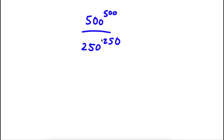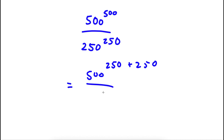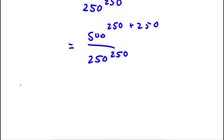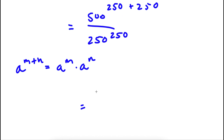Alright, so I have 500 to the power of 500 over 250 to the power of 250. Now, 500 we can rewrite as 250 plus 250. I have this over 250 to the power of 250. Now, if I have something in the form a to the power of m plus n, this is equal to a to the power of m times a to the power of n. So 500 to the power of 250 plus 250 equals 500 to the power of 250 times 500 to the power of 250.